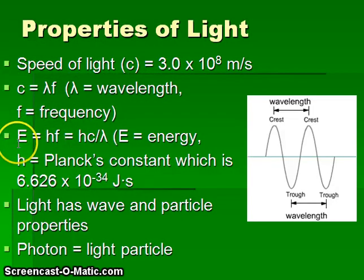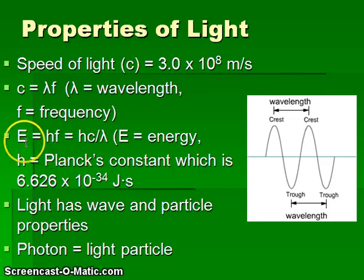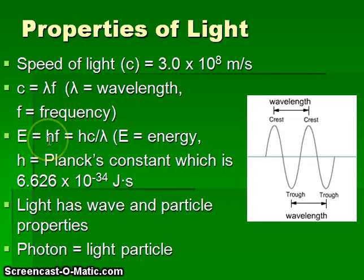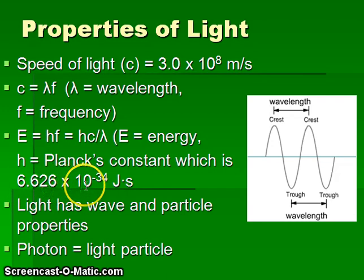This equation relates energy to frequency. Energy will be equal to the frequency multiplied by Planck's constant, which is 6.626 times 10 to the negative 34 joule seconds.